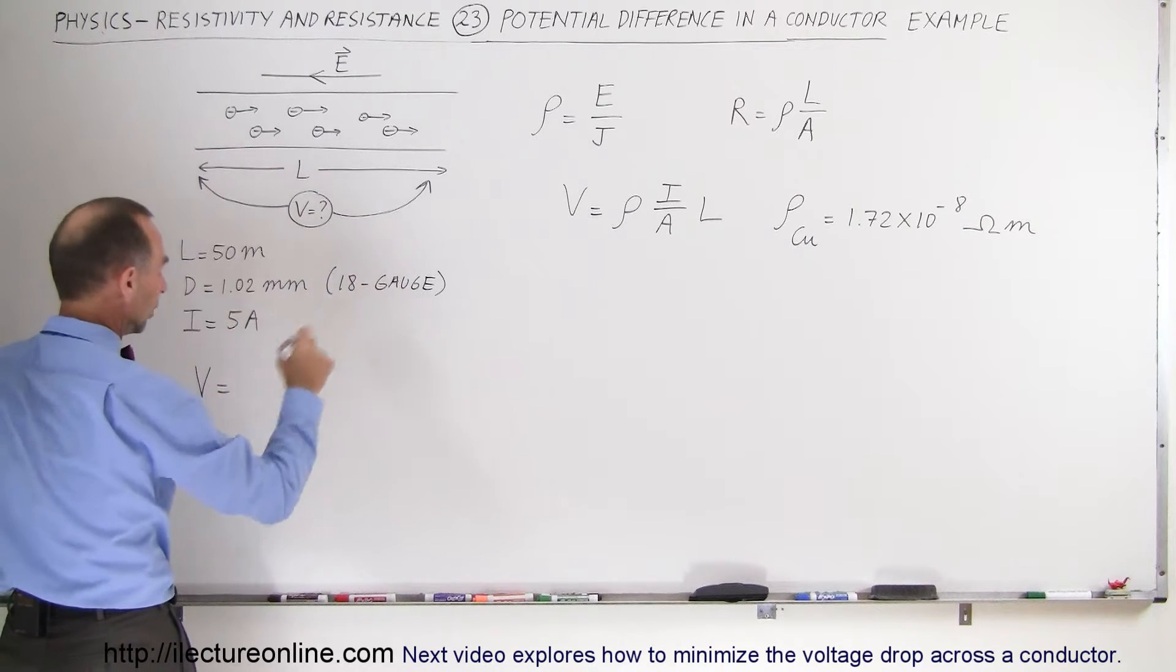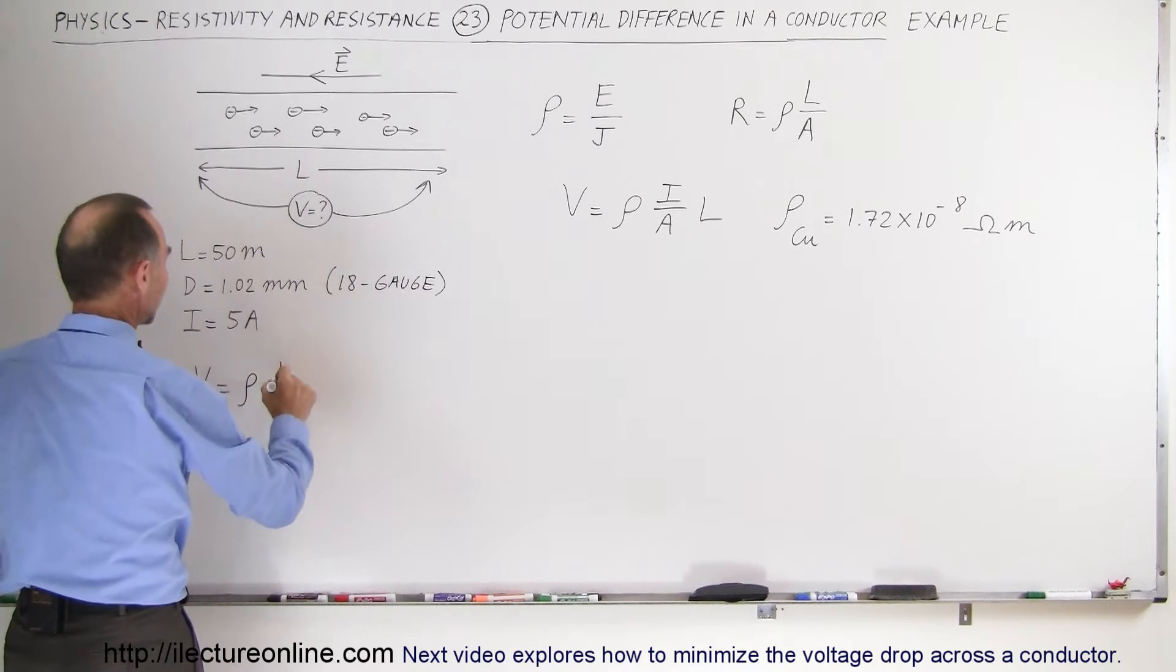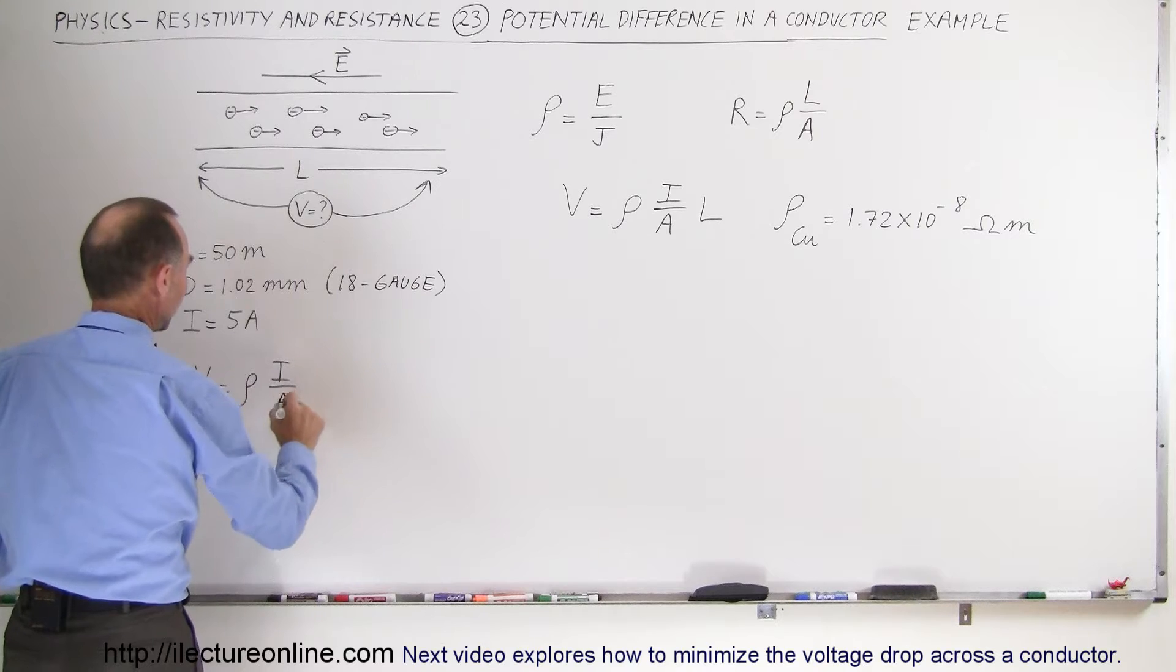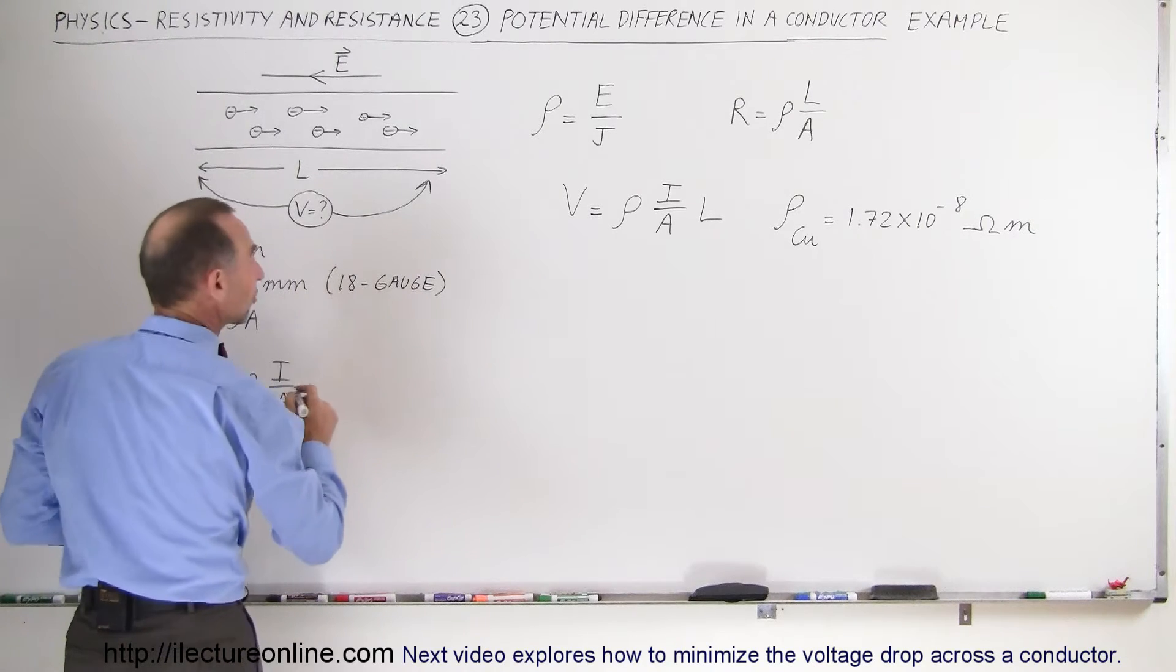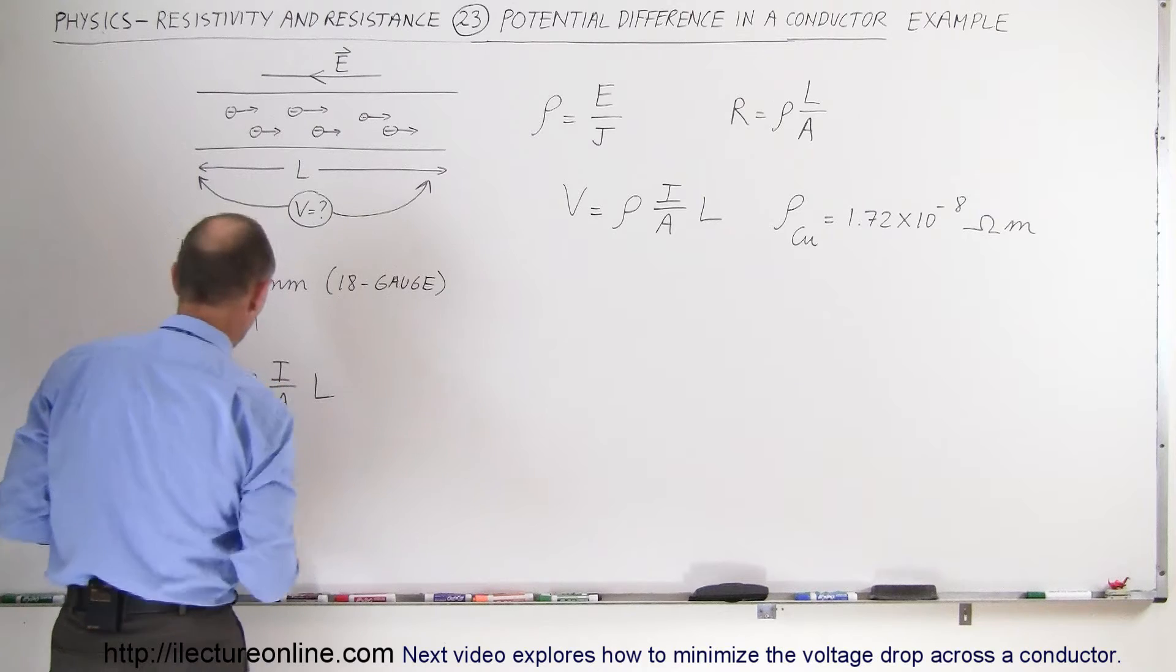The potential difference is equal to the resistivity times the current flowing through a certain unit area of wire or a cross-section area of wire times the length of the wire.